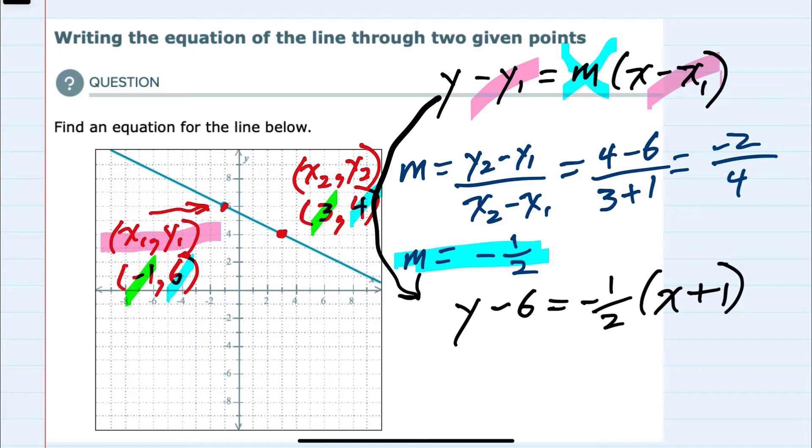we can stop here and leave the equation in point-slope form. We could, of course, also simplify and isolate the y to get it in slope-intercept form.